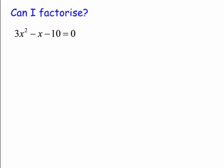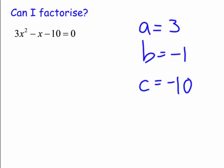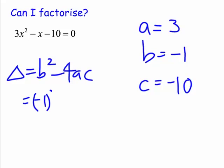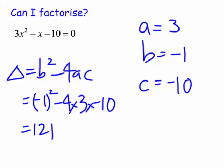Let's look at an example. Can we factor this quadratic? Let's work out what delta is. We note a equals 3, b equals minus 1, and c equals minus 10. So delta equals b squared minus 4ac: that's minus 1 all squared, minus 4 times 3 times minus 10, which gives 1 plus 120 equals 121. That's a perfect square — 11 squared — so we know it is factorable.